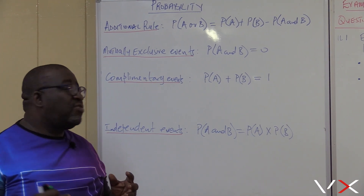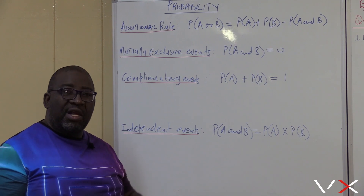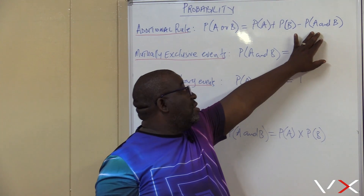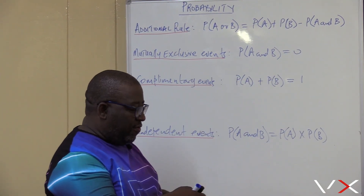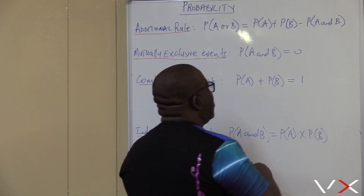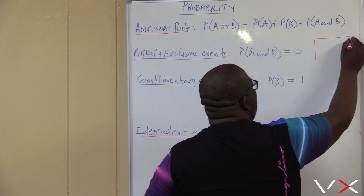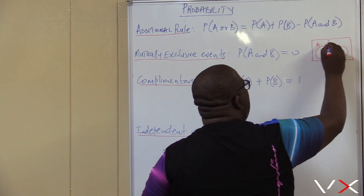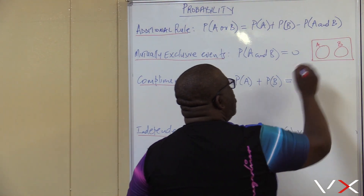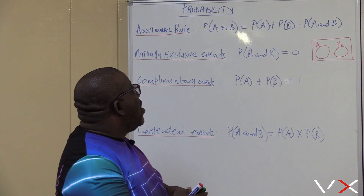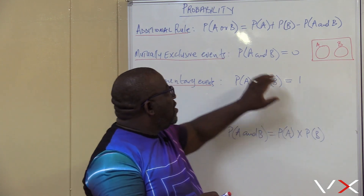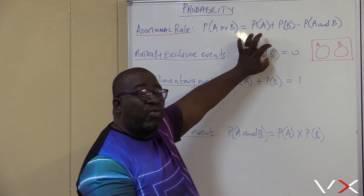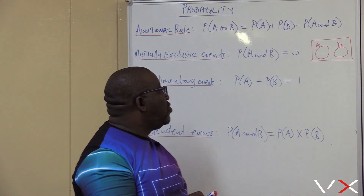Such events we refer to as mutually exclusive events — where there is no intersection. The intersection was probability of A and B. So when we say events are mutually exclusive, it's a scenario where events A and events B have no intersection between them. In other words, the intersection is 0. If the events are mutually exclusive, the probability of A and B, which is your intersection, will always be equal to 0.